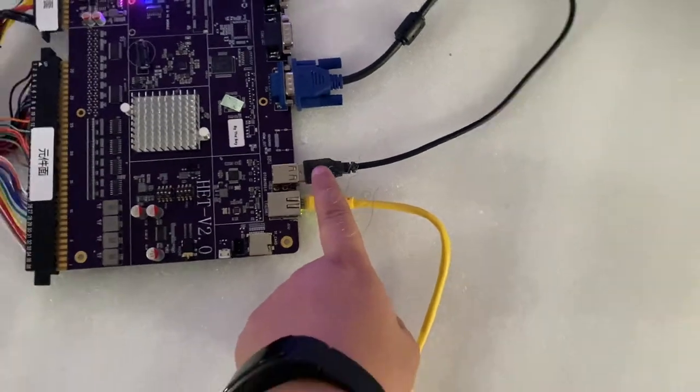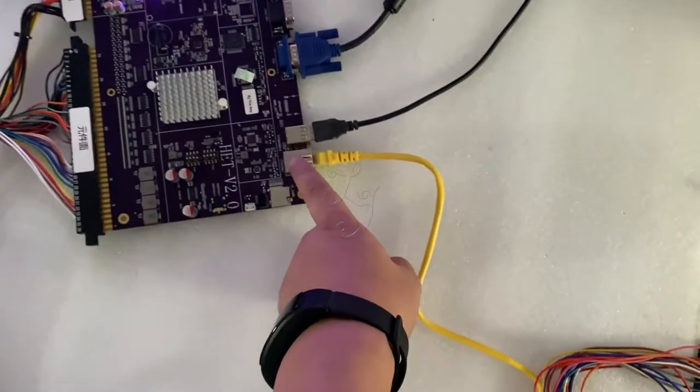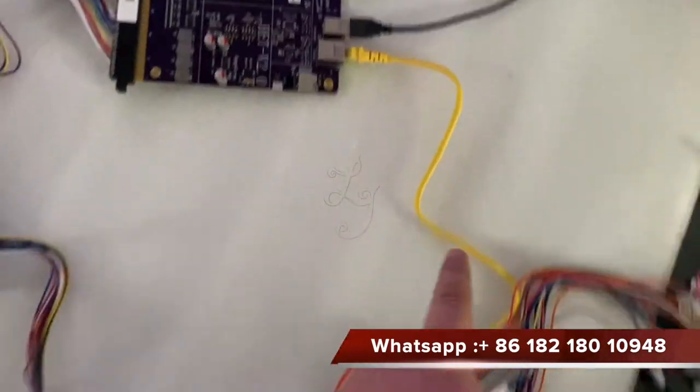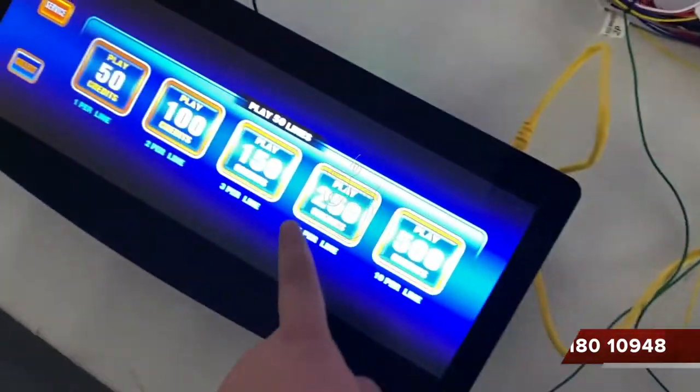And then this is the VGA which is connected with monitors. This is for the touch, USB touch cable. This is for the internet cable. The internet cable goes to here of the iDIC.